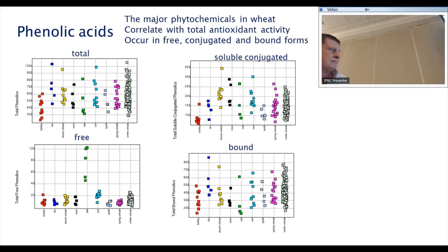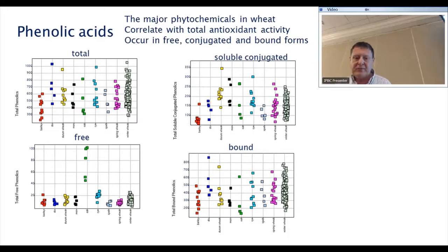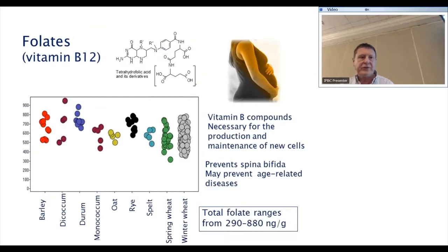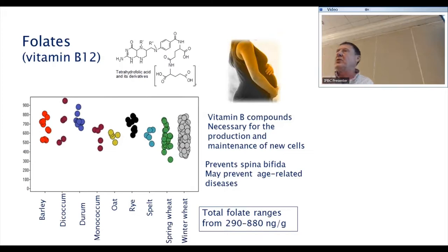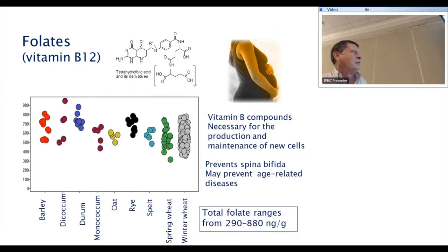Regarding B vitamins, we're particularly interested in folate because wheat is an important source of folate in the diet. But there's not much variation between species, and a very tight cluster of our 150 wheat varieties — all packed into that small cluster.